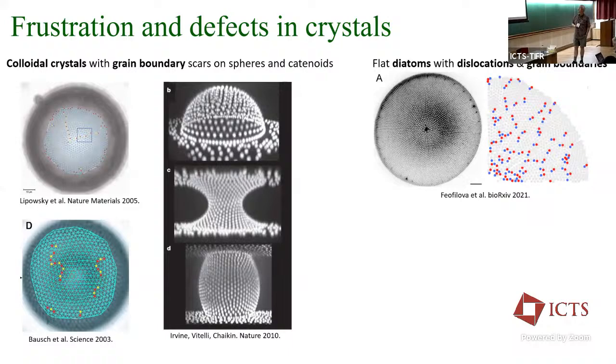Grain boundaries have typically been thought of in material science as non-equilibrium, history-dependent effects where two crystals collide. But here they really seem to be part of the ground state. What you're seeing are these 5-7-5-7 chains. Each 5-7 pair can be thought of as a dislocation, and chains of dislocations are one way of modeling a grain boundary. That's an example of how geometrical frustration associated with Gaussian curvature plays an important role in dictating ground states of ordered systems. You can also have frustration not from the curvature but from boundary conditions.